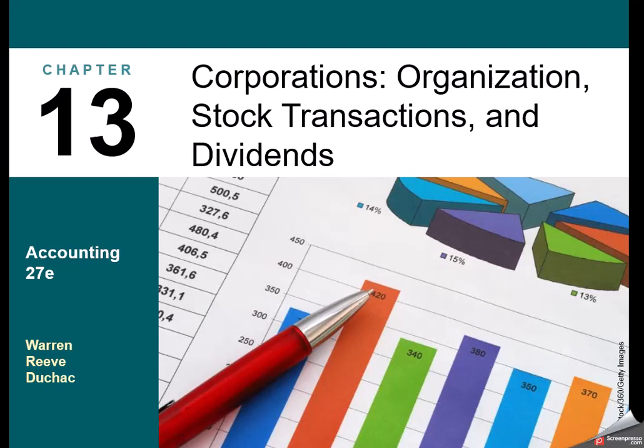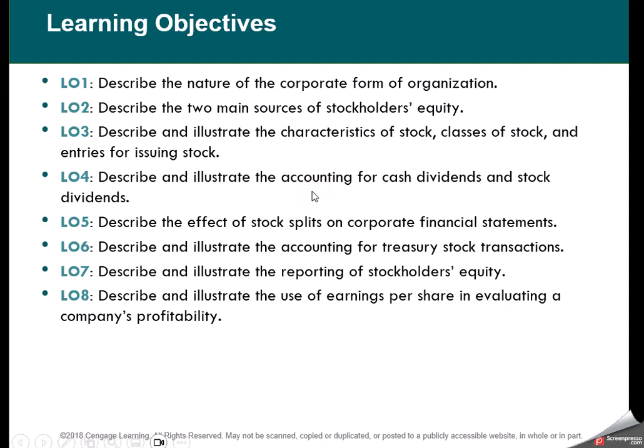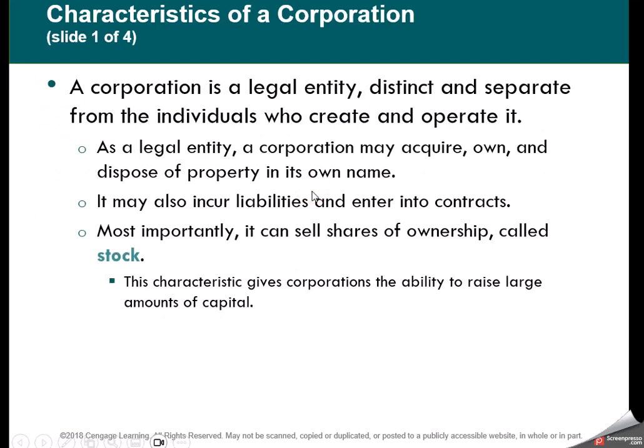This chapter, we're going to talk about corporations and stock transactions, as well as how they pay out dividends. A characteristic of a corporation is that it is a separate legal entity that can enter into contracts in its own name, can purchase property in its own name, and most importantly, can sell stock. It exists outside of the owners.